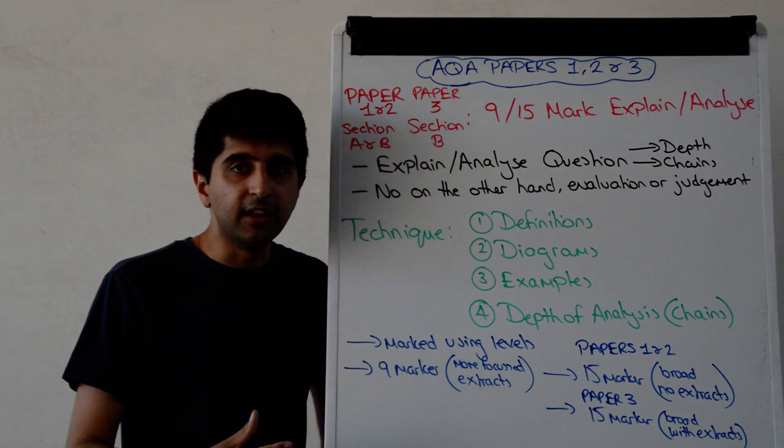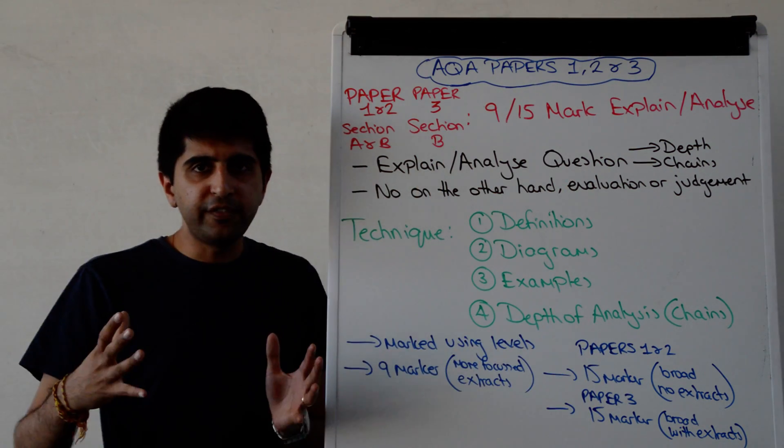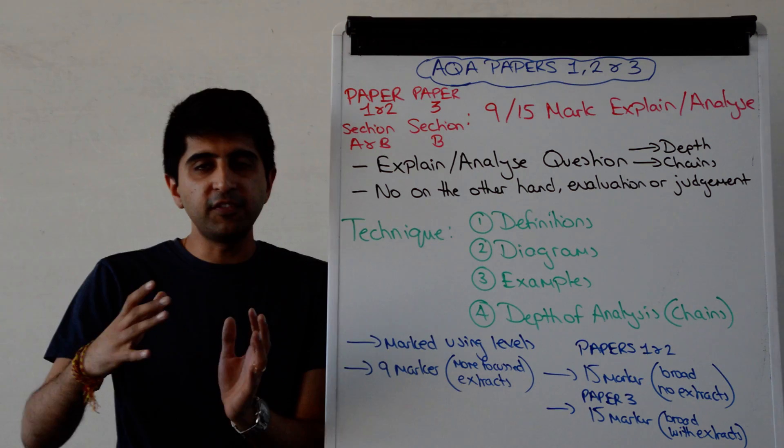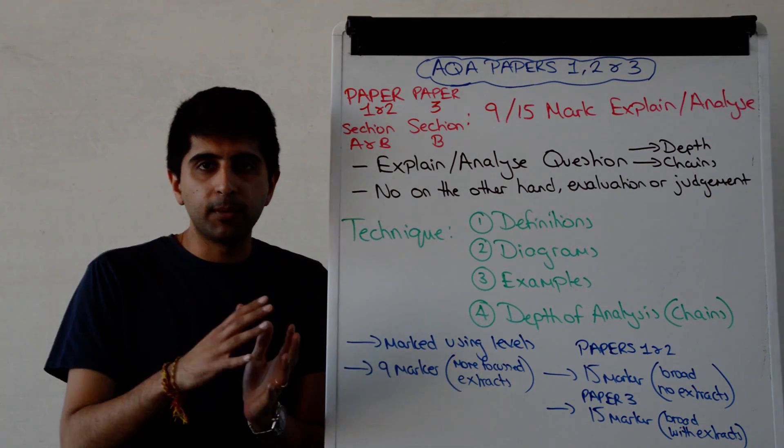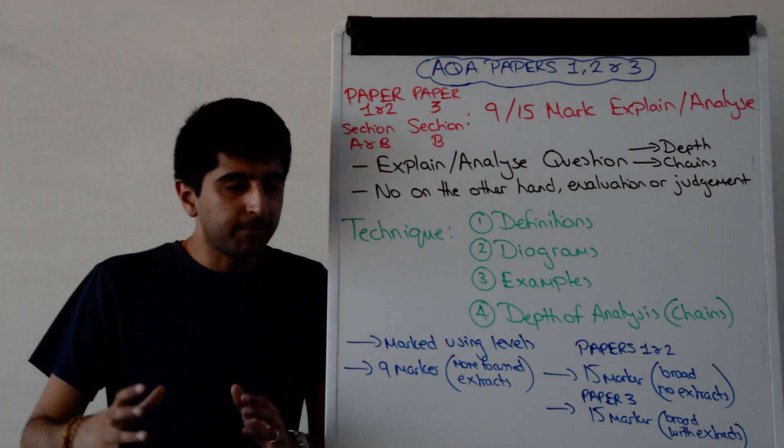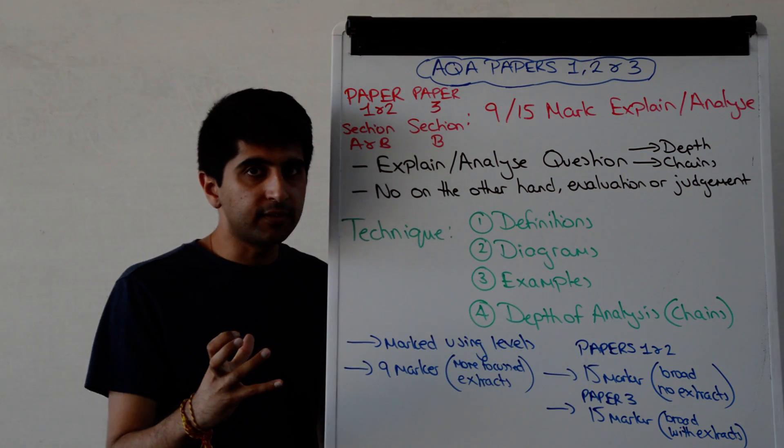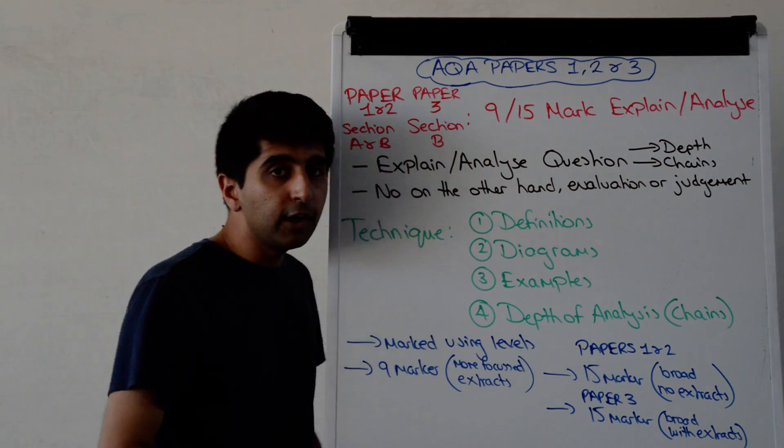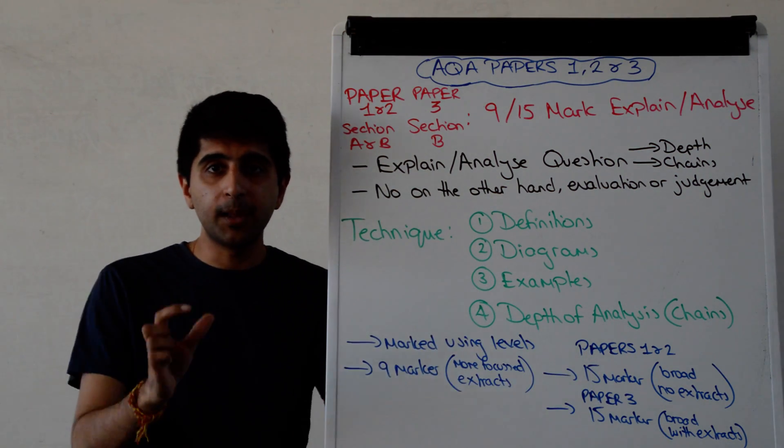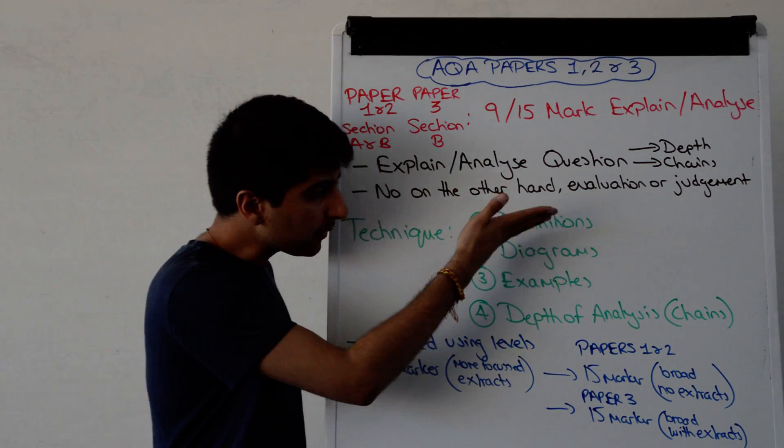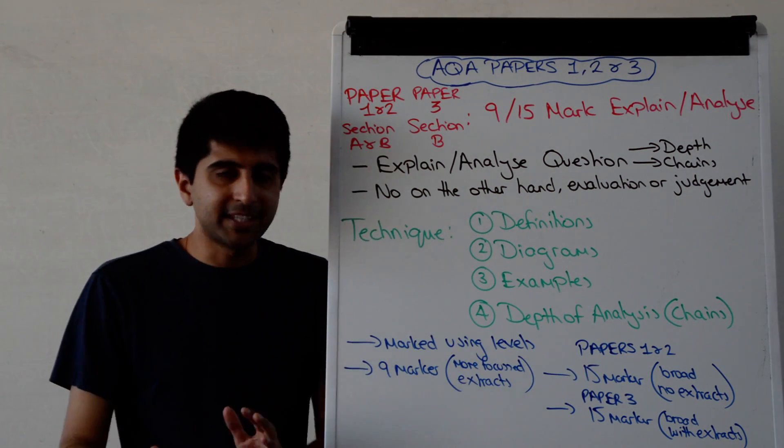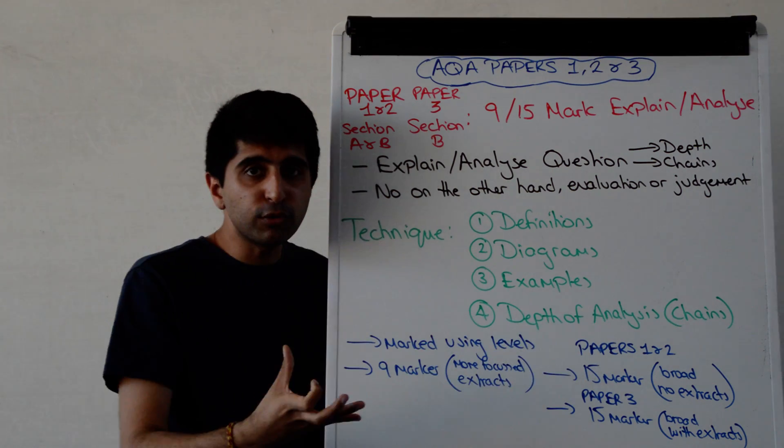Let's look at the technique then. For the 9 marker or the 15 marker, regardless of where it comes, if the 15 marker is paper 3, if it's paper 1 and paper 2, if it's the 9 marker, it doesn't matter. The technique is always the same for these questions. You start with defining all the key terms in the question. Then the order doesn't matter. You've just got to make sure that these three things are done.